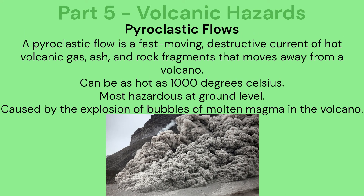Pyroclastic flows: a pyroclastic flow is a fast-moving, destructive current of hot volcanic gas, ash and rock fragments that move away from a volcano. They can be as hot as 1,000 degrees Celsius. These are most hazardous at ground level and are caused by the explosion of bubbles of molten magma in the volcano.